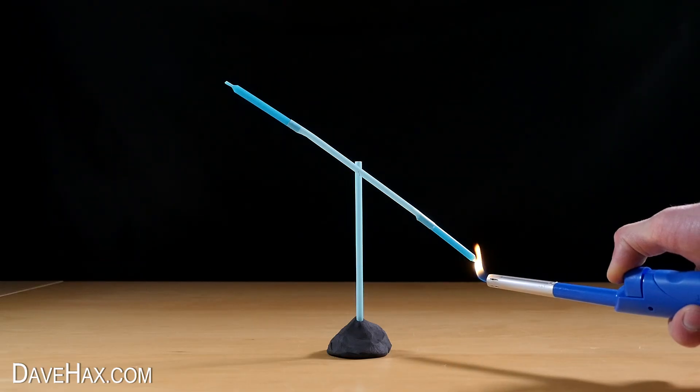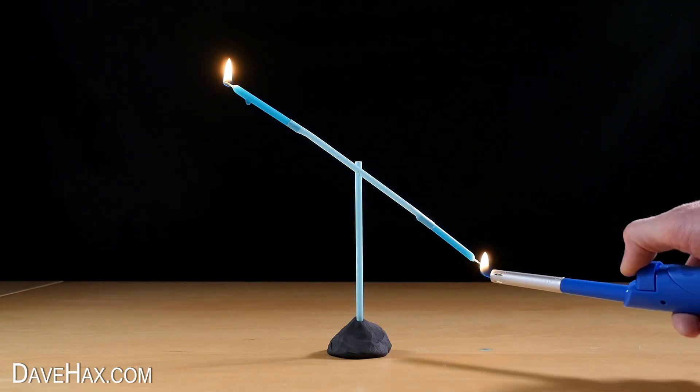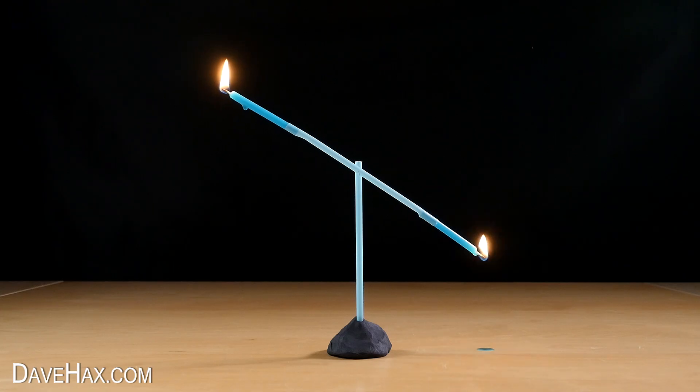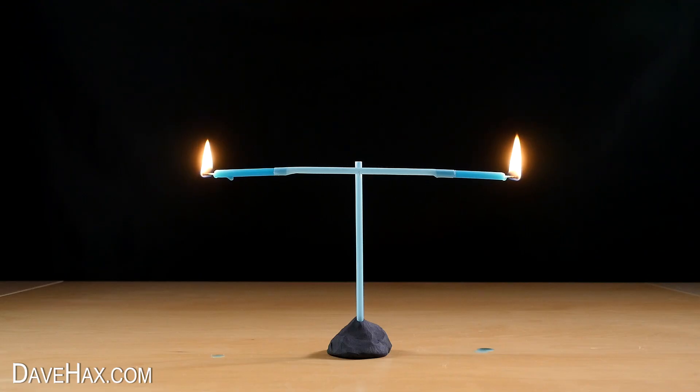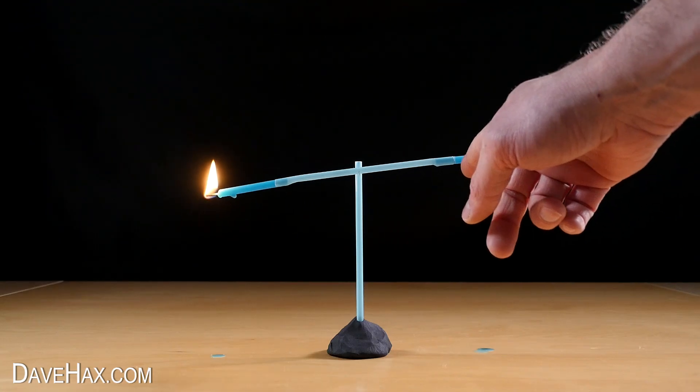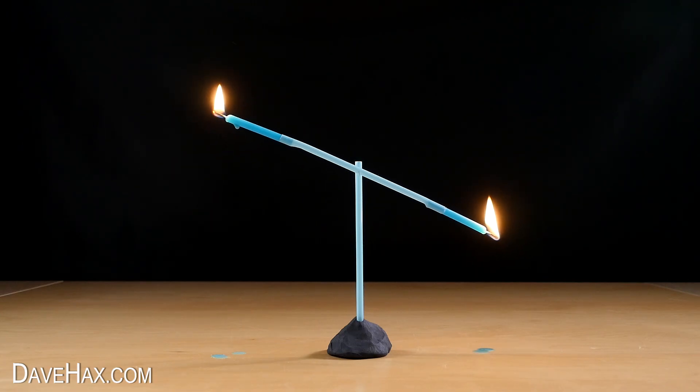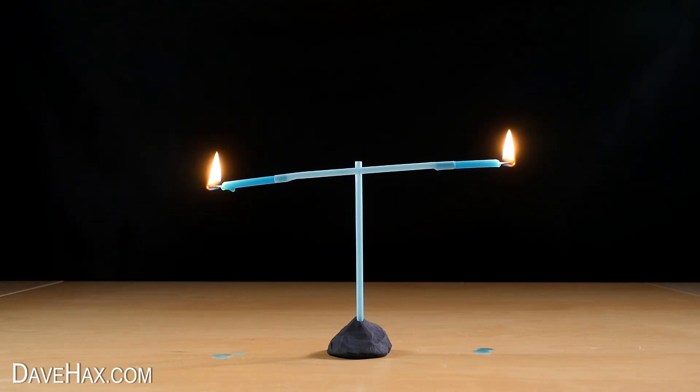Light it up and see what happens. The idea is as one candle melts it gets shorter and becomes lighter, so it raises to the top. Then because the other candle is facing downhill, it melts quicker than the higher candle and the whole process reverses.